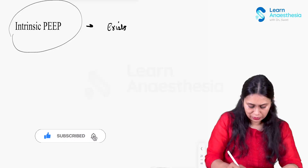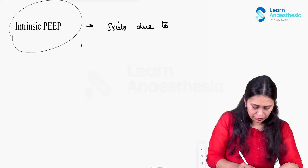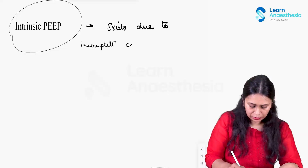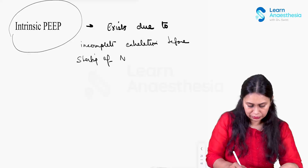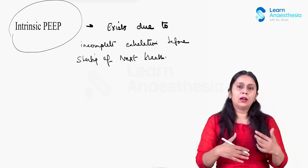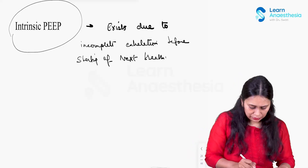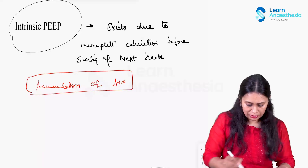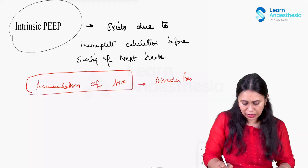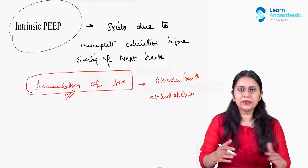This exists due to incomplete exhalation before initiation of the next breath. When a new breath starts before complete exhalation of the previous breath, there is accumulation of air in the alveoli. This increases alveolar pressure at the end of expiration — and PEEP is the alveolar pressure at end of expiration. So this accumulation of air causes an increase in intrinsic PEEP.